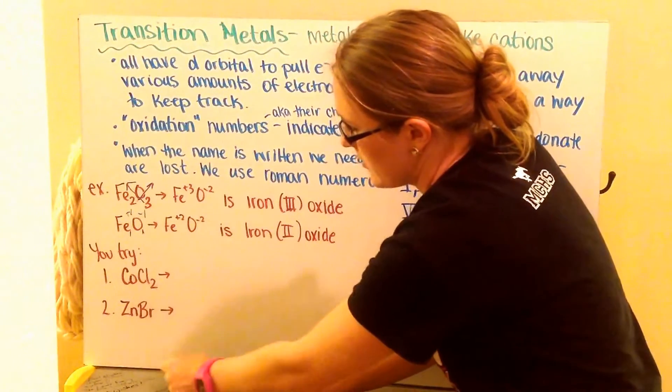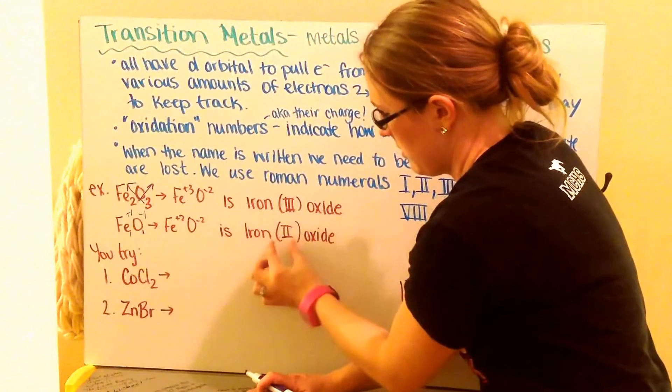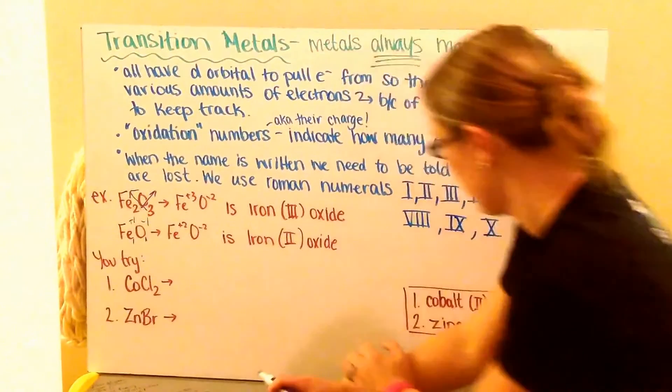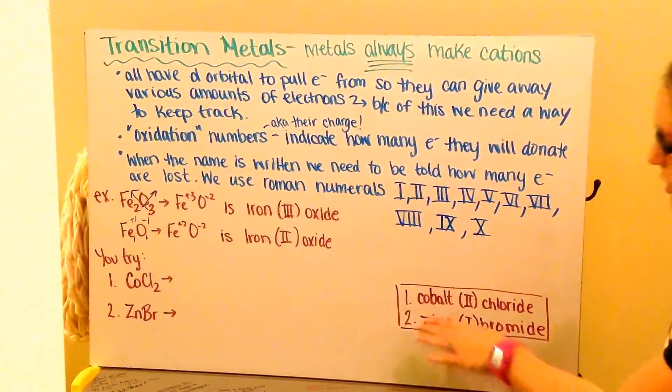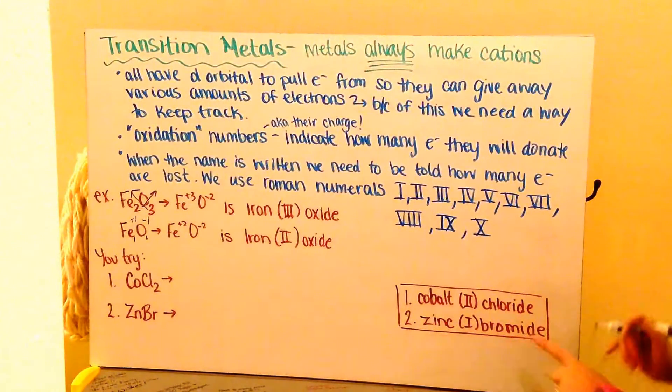Writing CoCl2 and ZnBr, crisscrossing up their subscripts to determine their charge, and then writing my metal, my roman numeral, and then my anion. You should have got cobalt (II) chloride and zinc (I) bromide.